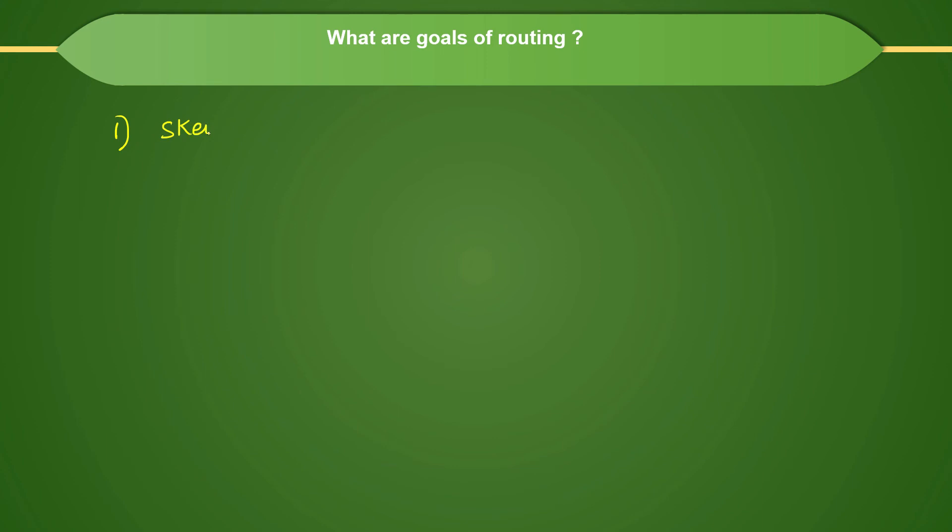So after doing the routing we have to see that our skew requirements are met. So skew requirements mean our target skew which we have planned should be met, that is in the clock path. We have already seen that part in the clock tree synthesis. And then your design should be shorts and opens clean. It should not have that.